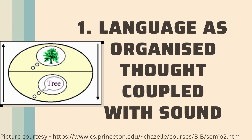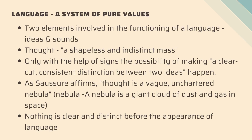In the very first part of the text — language as organized thought coupled with sound — language is identified as a system of pure values. Two elements are involved in the functioning of language: ideas and sounds. Thought, as Saussure says, is a shapeless and indistinct mass. Only with the help of language can a clear-cut, consistent distinction between two ideas happen. He affirms that thought is actually a vague, uncharted nebula.